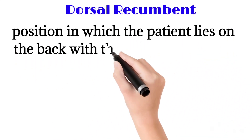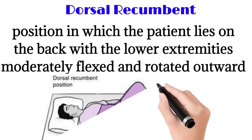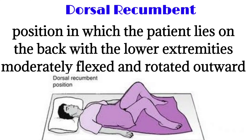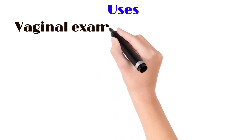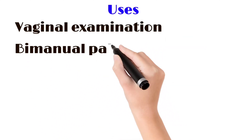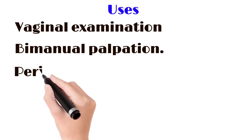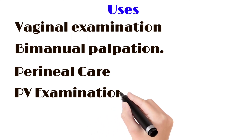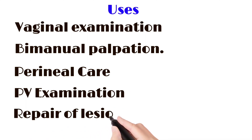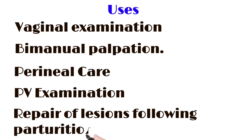Next is the dorsal recumbent position — the patient lies on the back with lower extremities moderately flexed and rotated outward. It is like supine but with knee flexed and rotated outward. It is used in surgical procedures, abdominal palpation, particularly during pregnancy, and repair of lesions.